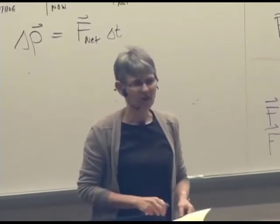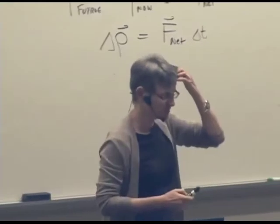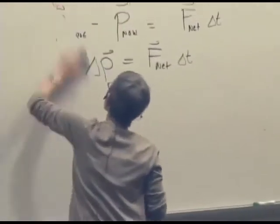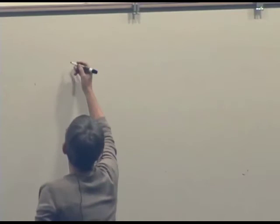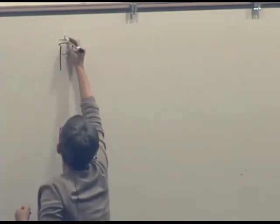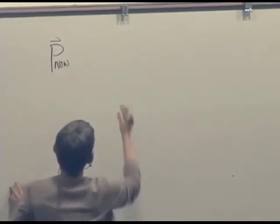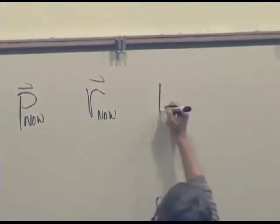And basically what we are going to have to do is do it step by step and do many steps. But the basic thing we are going to end up doing is going to look like this. So we are going to say, okay, we have some initial momentum. That is the momentum now of something. And we have its position now. And we know the net force acting on it now.